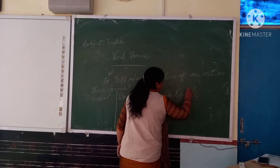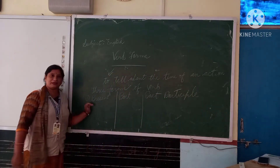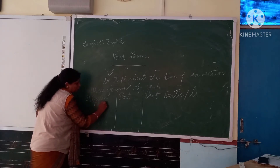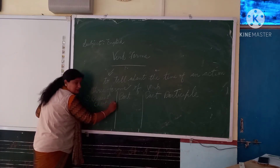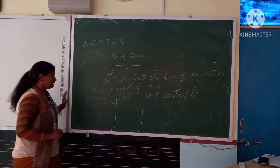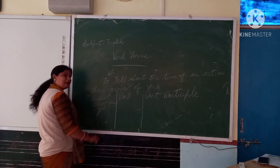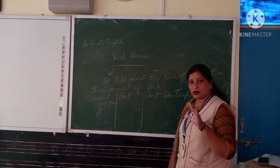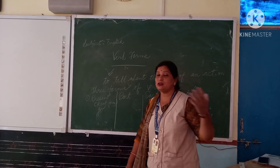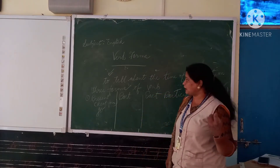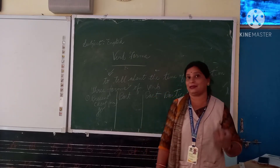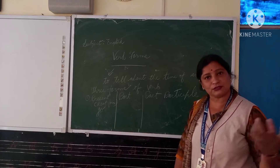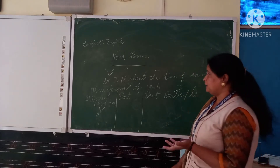Now, if we talk about the present form, it is called the root form, or root verb. The first form means the main action word. A verb is a word that shows an action, position, or state of being — for example, go, come, play, jump, run, sing, drink, eat. All these are verb forms because they are action words.